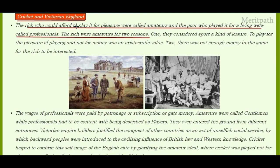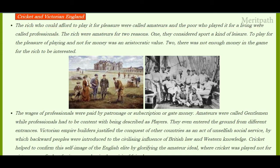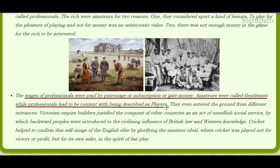In Victorian England, the rich who could afford to play for pleasure were called amateurs, and the poor who played for a living were called professionals. The rich were amateurs for two reasons: first, they considered the sport a kind of leisure — to play for the pleasure of playing and not for money was an aristocratic value; second, there was not enough money in the game for the rich to be interested. Amateurs were called gentlemen while professionals had to be content with being described as players, and they even entered the ground from different entrances. Wages of professionals were paid by patronage, subscription, or gate money.